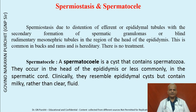Spermiostasis is hereditary and such animals should not be used for breeding. A spermatocele is a cyst that contains spermatozoa; they occur in the head of the epididymis or less commonly in the spermatic cord. Clinically they resemble epididymitis but contain milky rather than clear fluid.